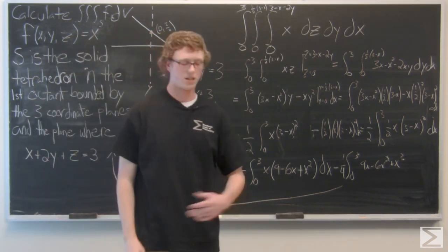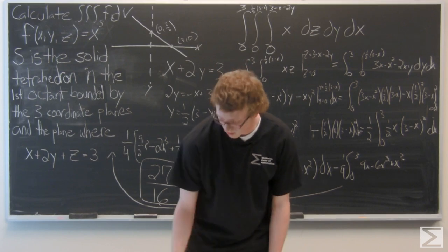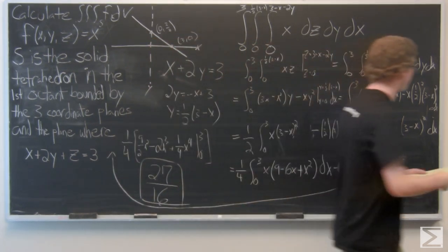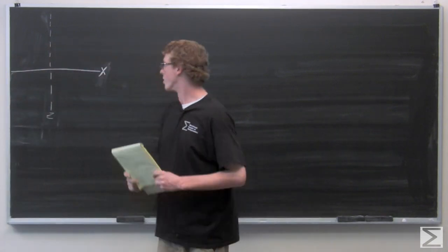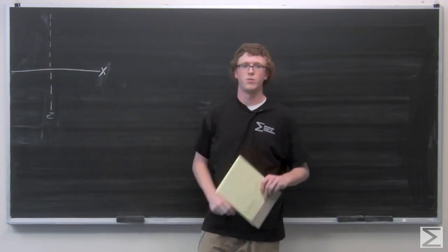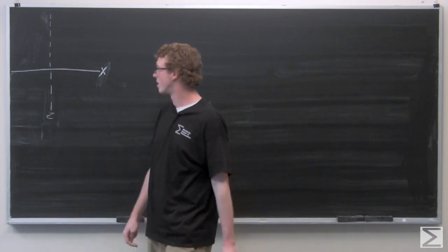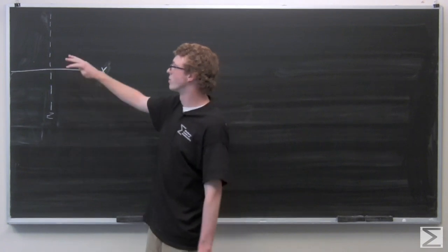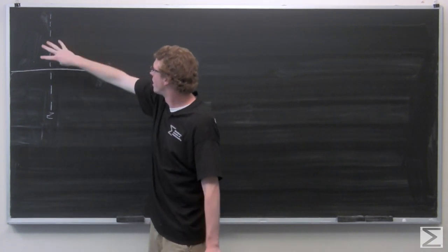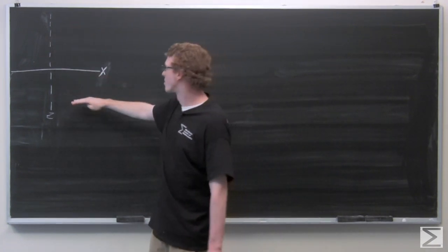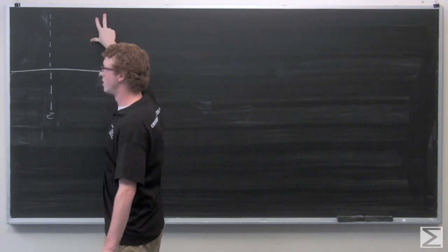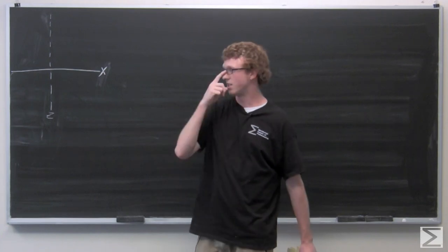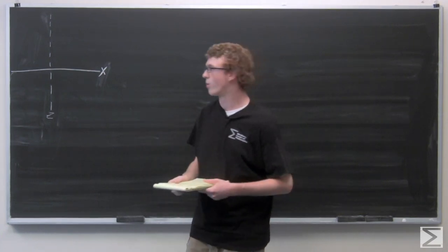We've projected into the xy plane. Now part b of the problem asks us to project into the xz plane. The z-axis is the dotted line; we're in the first octant. To project into the xz plane — similar to setting z equal to zero before — this time we're going to set y equal to zero.